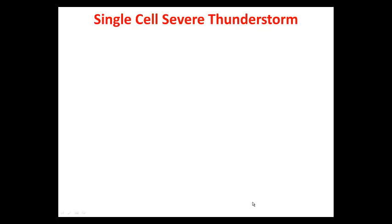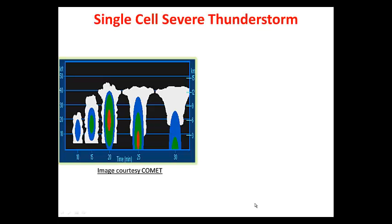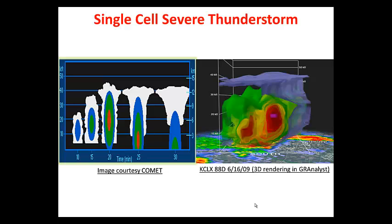The first and most common type is the single-cell severe thunderstorm, also known as the pulse storm, and they generally last between 20 to 25 and as much as 45 minutes. We see these most often in the summertime when we don't have a whole lot of wind shear, but there is quite a bit of heat and humidity. These thunderstorms are best known for producing hail up to maybe the size of one inch in diameter, some downburst winds 60 to 70 miles per hour at times, and rarely a brief tornado.